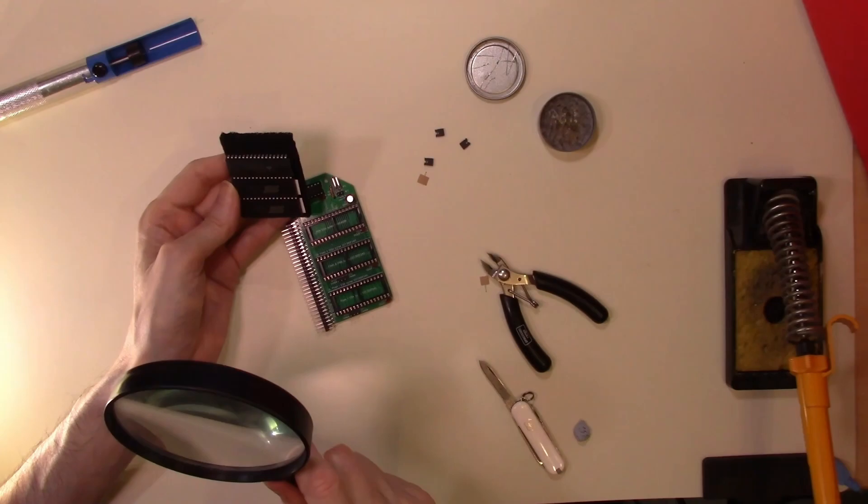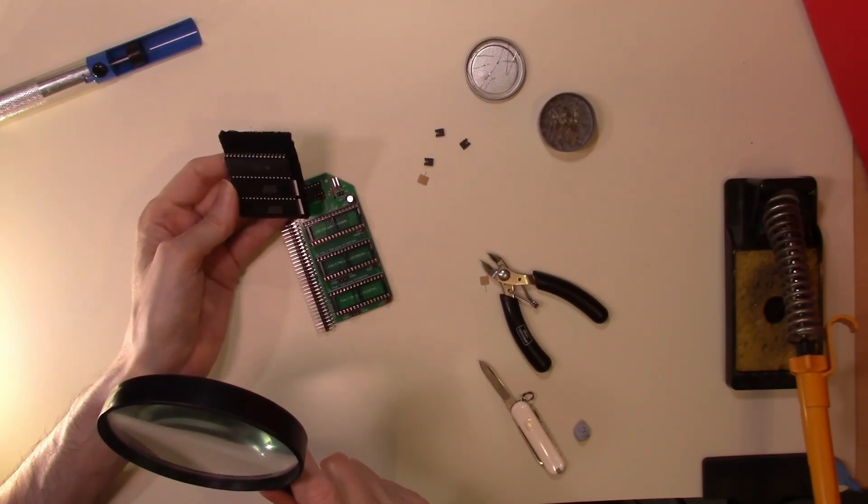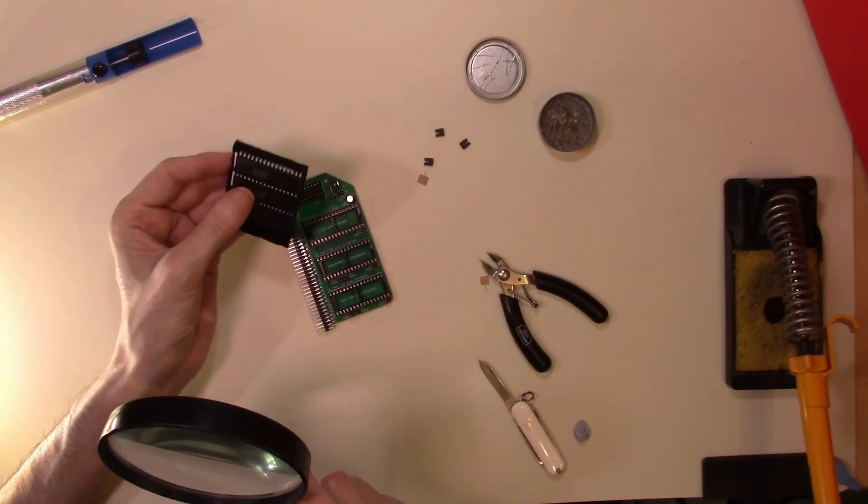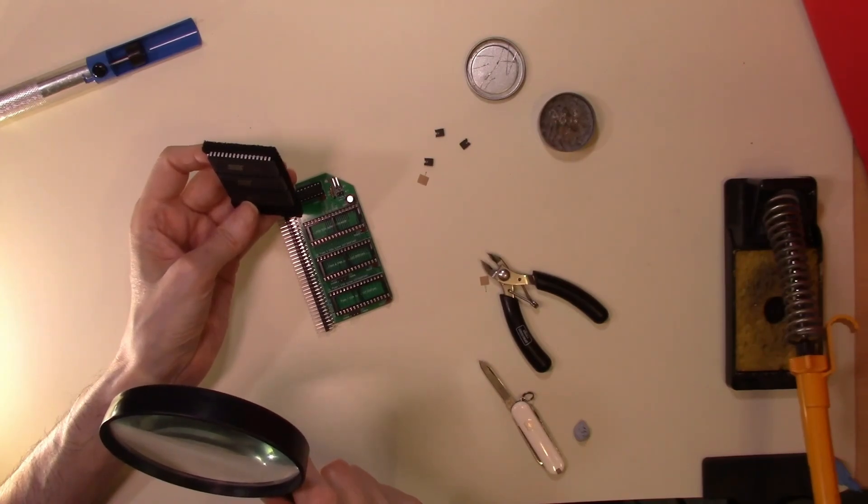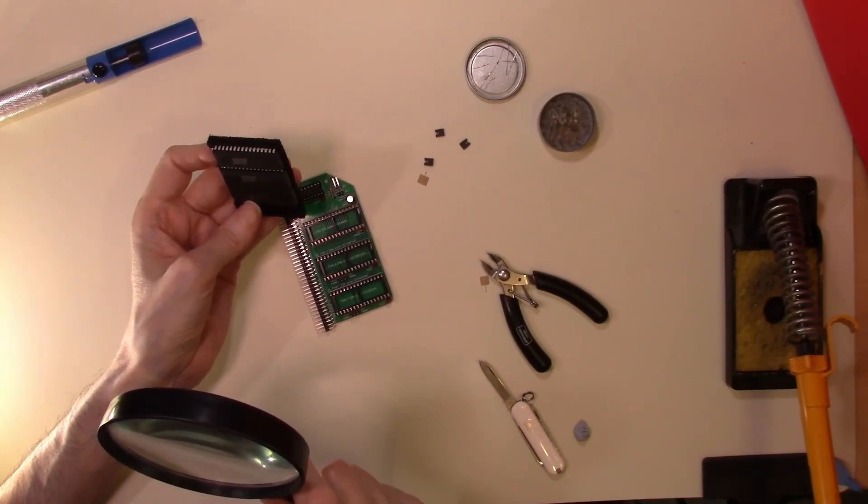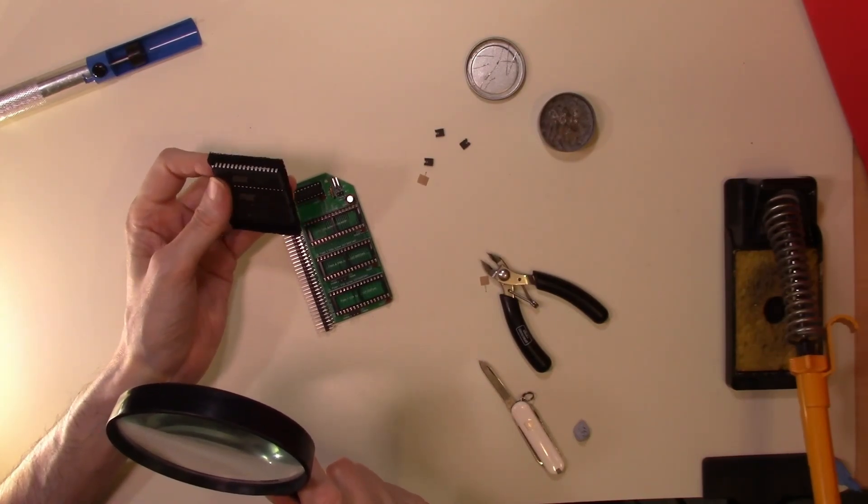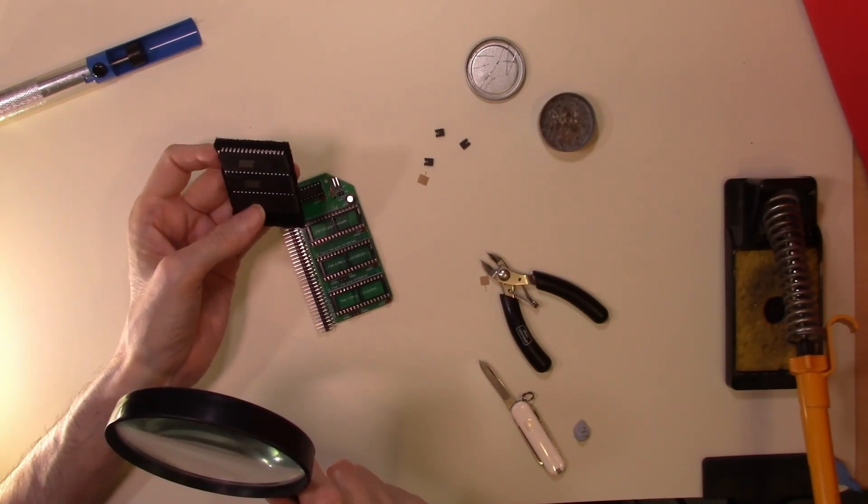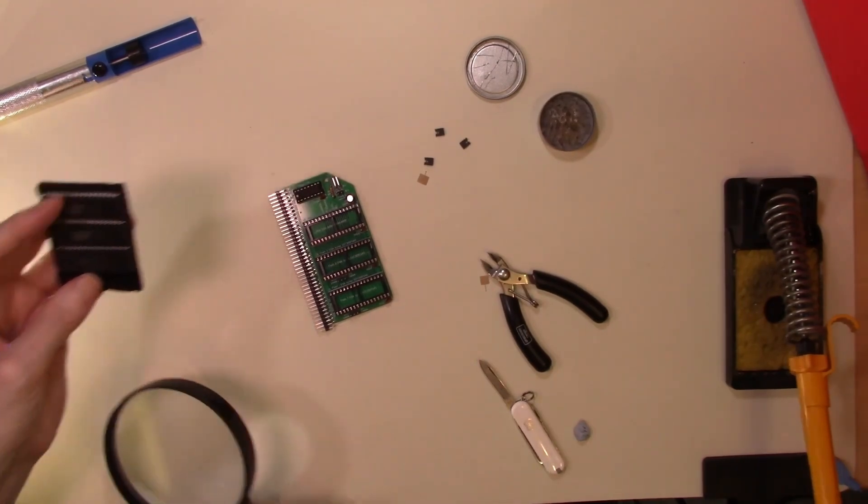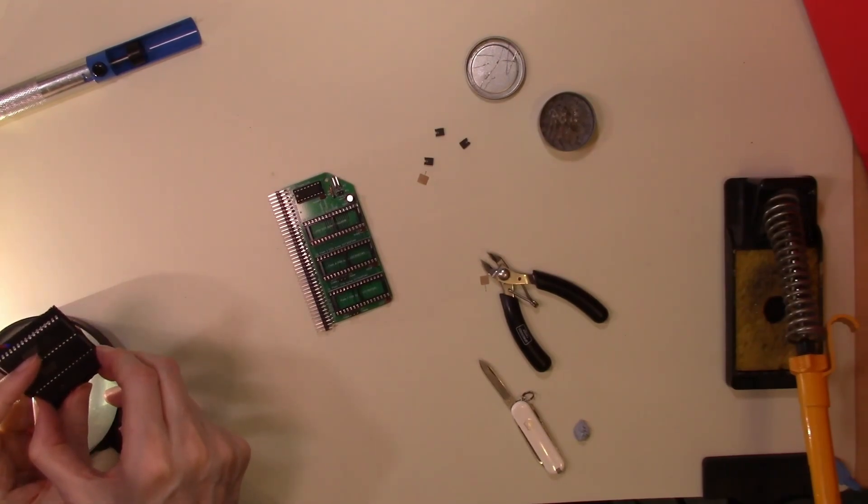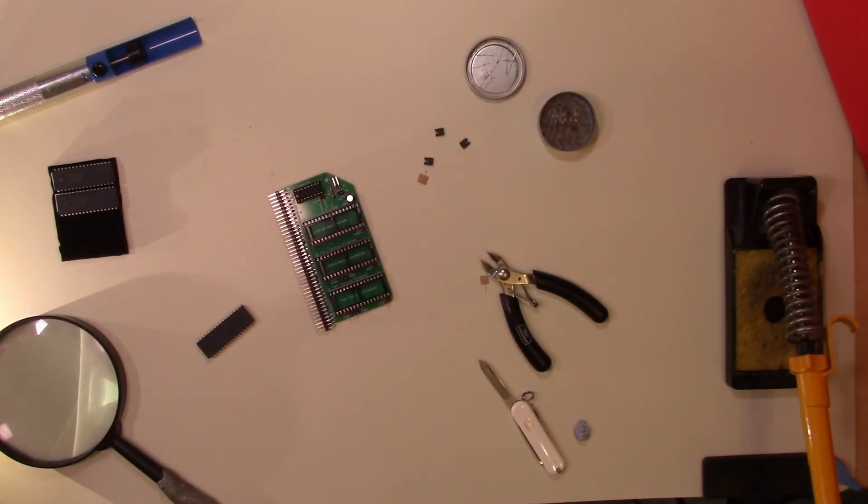Now we have the RAM to put in and the two ROMs. So let's just have a look at our chips and see which is which. These are the two ROMs, and this one at the bottom will be the RAM.